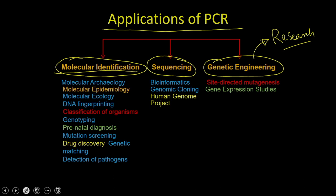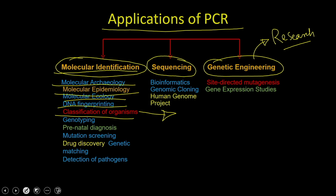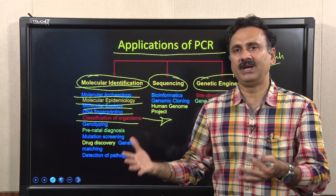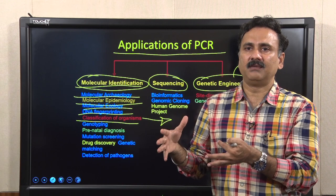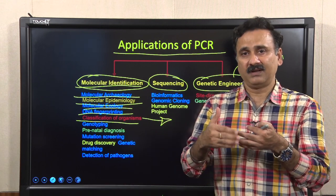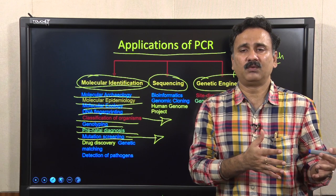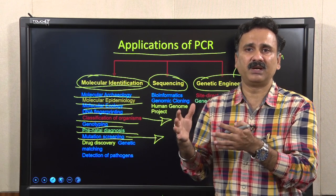Molecular identification plays a role in molecular archaeology, molecular epidemiology, ecology, DNA fingerprinting, and classification of organisms. You can amplify the DNA and match it with sequences available in the database, which helps precisely categorize a particular plant, animal, or other creature. You can also use PCR for genotypic and prenatal diagnostics and mutation screenings.